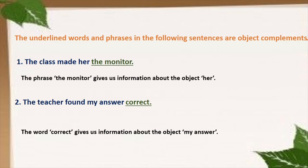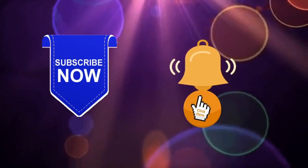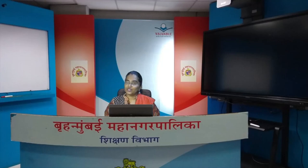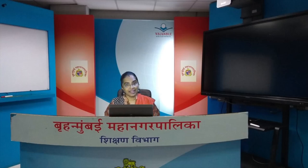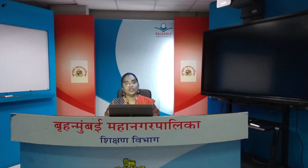In today's lesson we talked about Ruskin Bond, common and uncommon pets, the story of 'A Crow in the House,' vocabulary exercises, and subject and object complements. That is all for today. If you enjoyed this video, please like it and subscribe to our channel, the MCGM portal for education, and hit the bell button so you get notified whenever a new video is uploaded. Thank you so much — let's meet again soon.